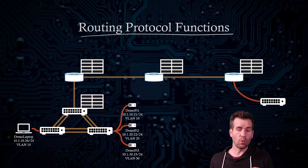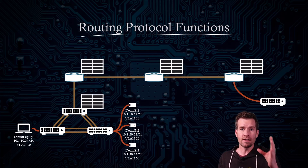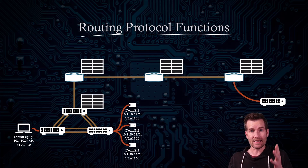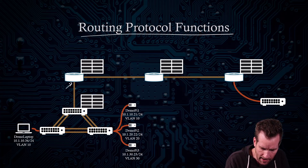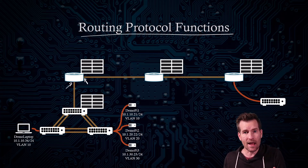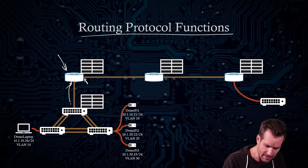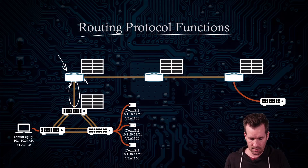In our last module, we went over some ways that a router would learn of other networks. One of those is a directly connected network. When we set up a local link on a router, it becomes aware of the network that it's directly connected to. So for router one, when we set up this interface, it then learns that is a network directly connected to it.